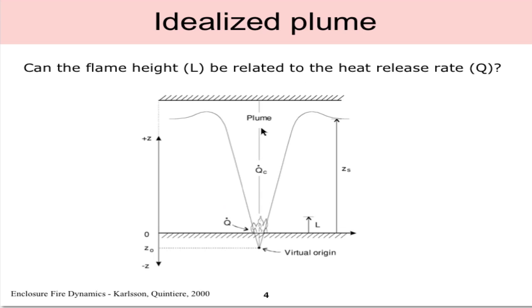We ask the question if the flame height, the physical flame height which is denoted as L, can we relate that to the heat release rate Q or other independent parameters? Shown here in this diagram is some fire at the floor level with some physical flame height L, and we see that inverted cone profile going upwards to the ceiling and the entire region up here defined as the plume region.